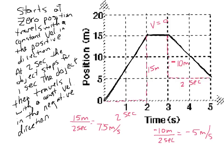That tells us the position changed by decreasing in the negative direction 5 meters for every 1 second. So now we have clearly our velocity in the first segment, our velocity in the second segment, and our velocity in the third segment.